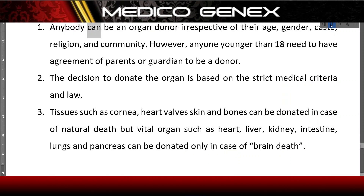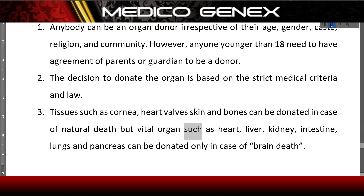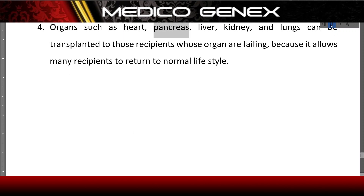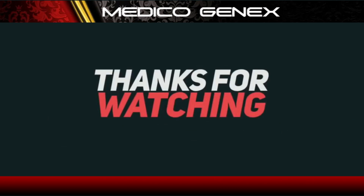Facts about donation: anybody can be an organ donor irrespective of age, gender, caste, religion, or community; however, anyone younger than 18 needs parental or guardian agreement. The decision to donate is based on strict medical criteria and law. Tissues such as cornea, heart valves, skin, and bones can be donated in case of natural death, but vital organs such as heart, liver, kidney, intestine, lungs, and pancreas can be donated only in case of brain death. Organs such as heart, pancreas, liver, kidney, and lungs can be transplanted to recipients whose organs are failing, allowing many recipients to return to a normal lifestyle.